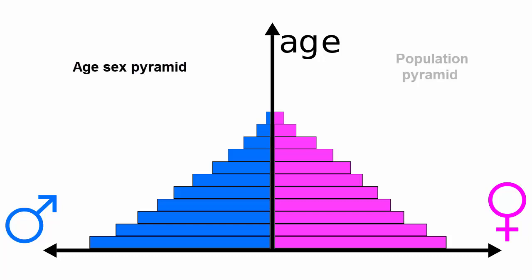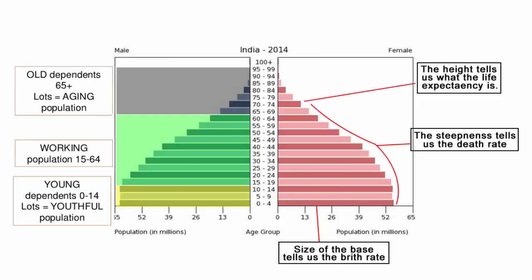What do we mean by age-sex pyramid? It simply refers to the number of females and males in different age groups. A good amount of information about the population broken down by age and sex can be read from a population pyramid. It also tells us how population changes over time — meaning what's the birth rate, death rate, and life expectancy of a country.